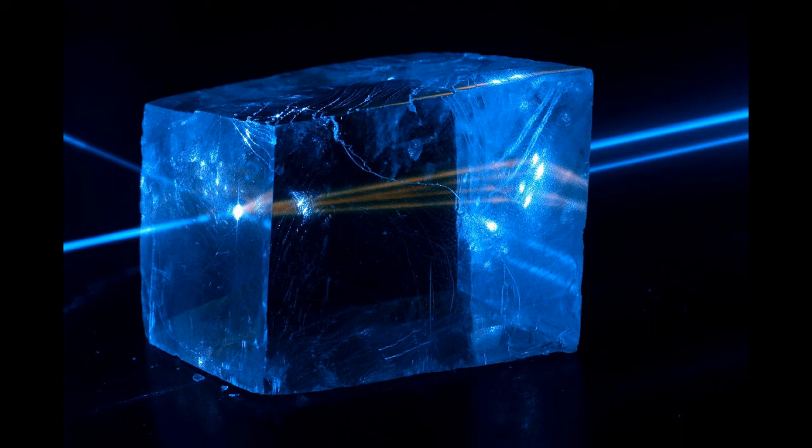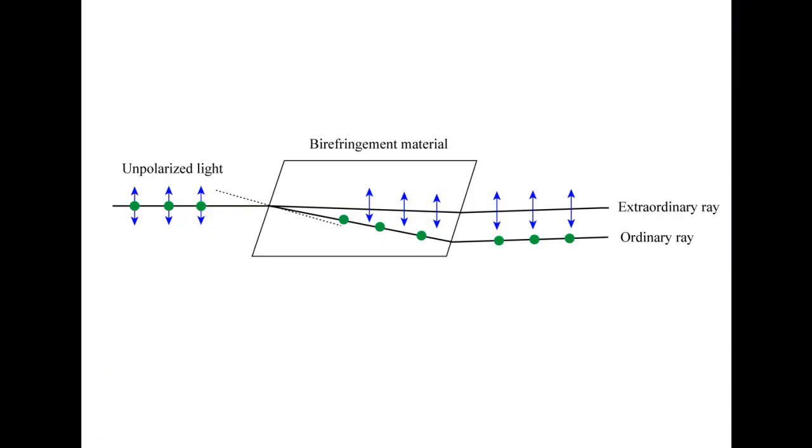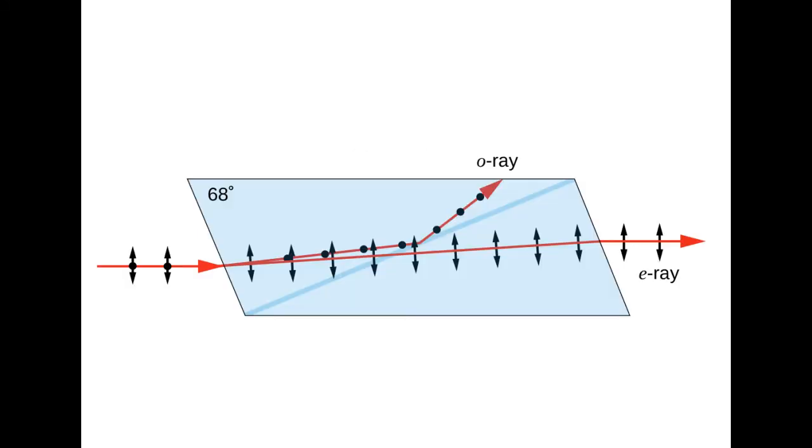This produces what is called as the ordinary and extraordinary optical beams. Thus, by orienting the crystal in a suitable fashion, one can produce photons with the ordinary polarization and the extraordinary polarization. Remember that the ordinary and extraordinary polarizations are orthogonal to one another.